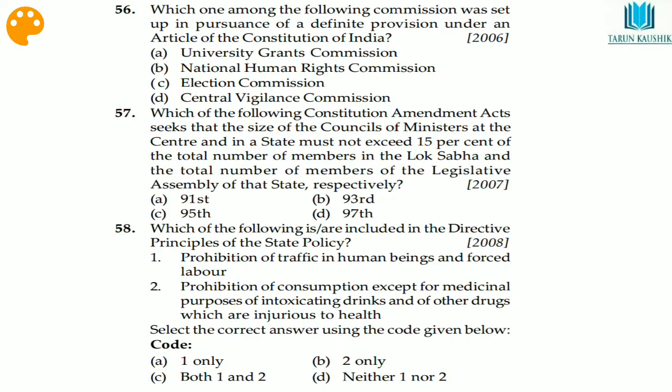Question 56: which one among the following Commissions was set up in pursuance of definite provisions under an article of the Indian Constitution? The answer is the Election Commission, because it has to conduct and direct elections. The Election Commission is the correct answer.